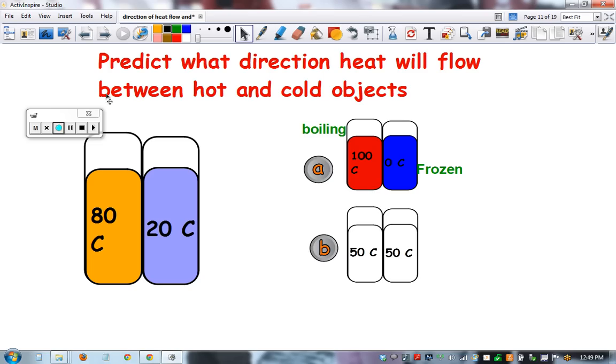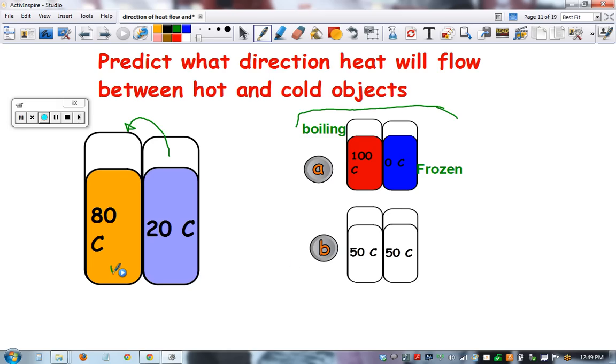That's a demo we did in class that you won't get advantage of. So the question to start is predict what direction heat will flow between hot and cold objects. Will the 20 degrees of heat leave the cold one and be added to the warmer one, which is example A, or will the extra heat in the 80 degree one be transferred to the colder one until they become equal?